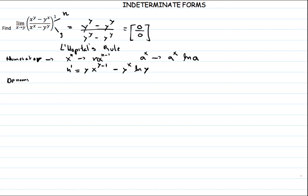Now for the denominator. We have the expression x raised to x, which is a mix of the power rule and the exponential rule, so we need to know how to find its derivative. The derivative of the y raised to y term is zero, because y is a constant — even a constant raised to 1 million remains zero.